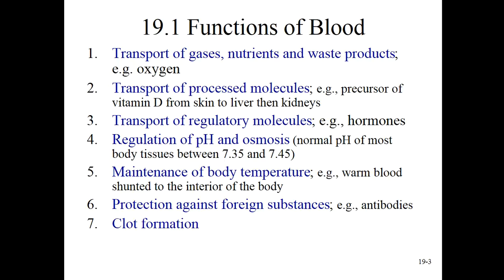This one is a little misleading — number five, maintenance of body temperature. The blood doesn't really do that so much as the cardiovascular system shunting blood to the periphery to cool, or to the core to keep us warm when it's cold. Number six alludes to white blood cells and their ability to produce life-saving chemical weapons known as antibodies. And then clot formation. Blood does maybe a lot more than you had thought.